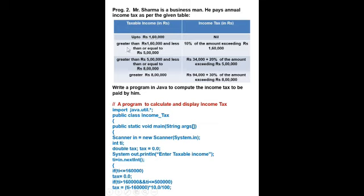First condition: if taxable income <= 1,60,000, then tax = 0, because tax is nil. Next condition: if taxable income > 1,60,000 and taxable income <= 5,00,000, then tax = (ti - 1,60,000) * 10 / 100 — because 1,60,000 rupees is free for income tax, so we subtract it and find 10% of the remaining amount.